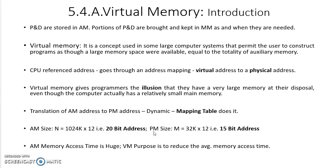Main memory is also called physical memory because that memory resides inside the computer. Auxiliary memory is considered to be secondary memory which resides outside the computer. For example, a pen drive, a CD, a DVD — all are secondary memories. They may or may not be connected to the computer, so they are auxiliary. Auxiliary means optional.